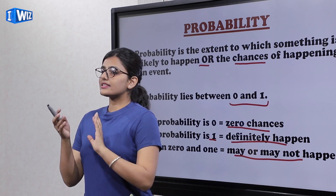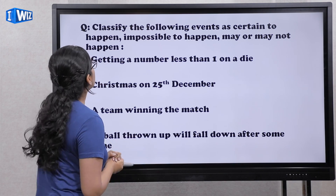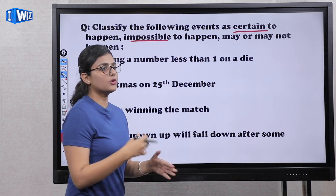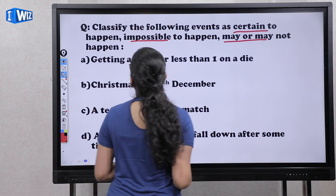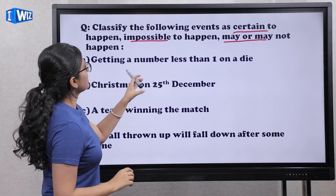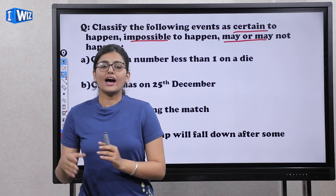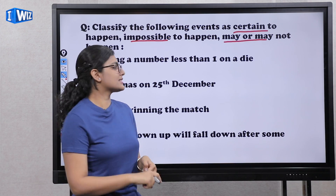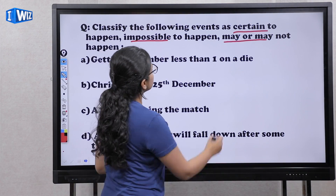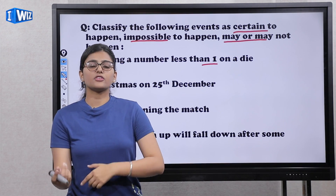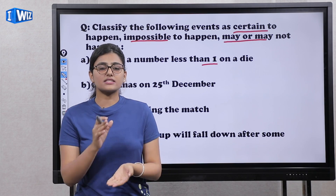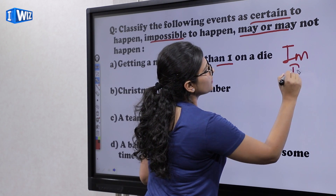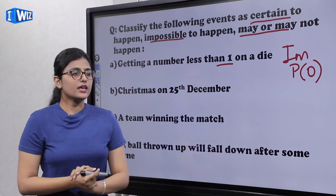So let's see some questions. The question says: classify the following events as certain to happen, impossible to happen, or may or may not happen. The first is getting a number less than one on a die. A die — like the one you use in Ludo — has numbers from one to six. Getting a number less than one is not possible. So this is an impossible event, and the probability is zero.